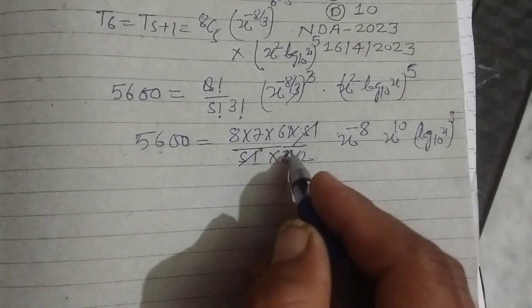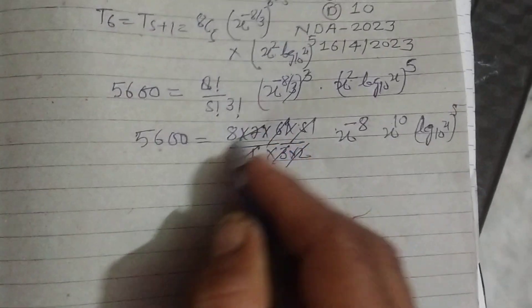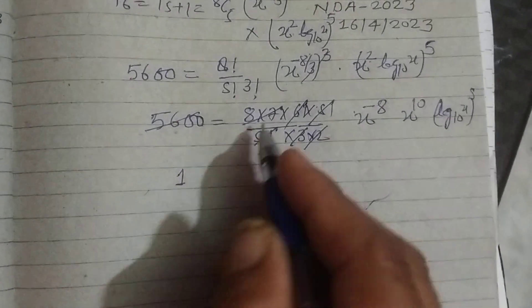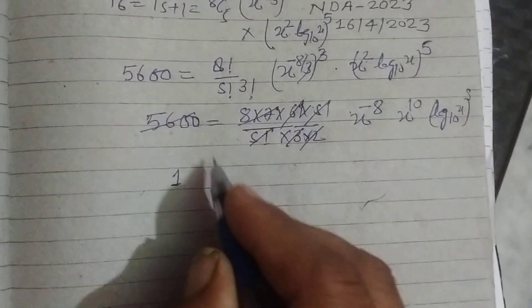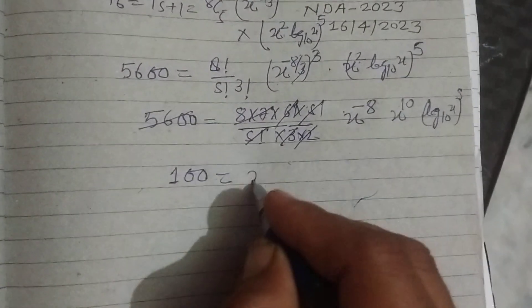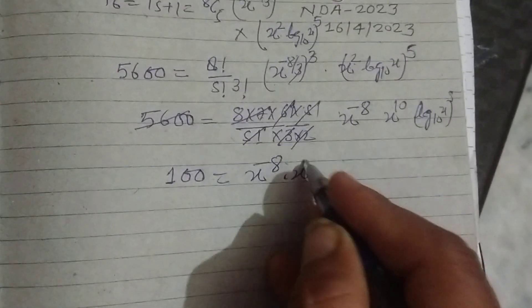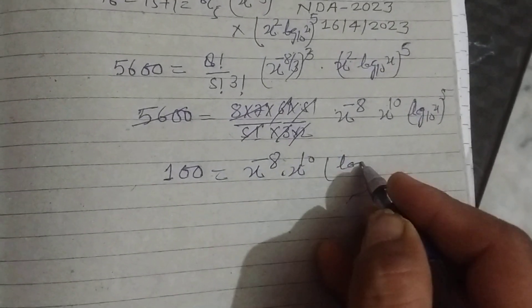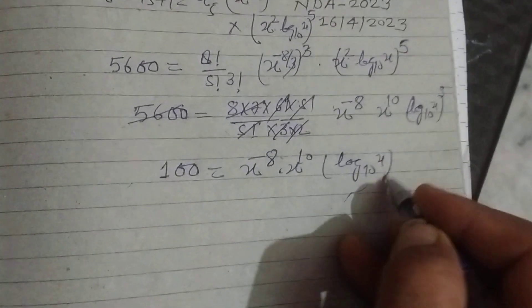So the 5s cancel out, 3 and 2 with 6, and we get 56. So this is 100 times x^(-8) times x^(10 log₁₀(x))^5.